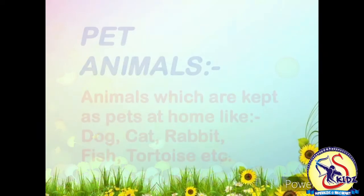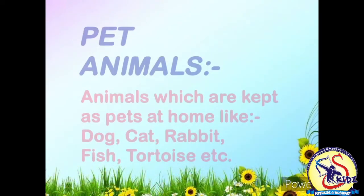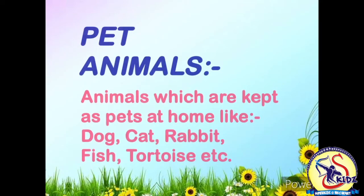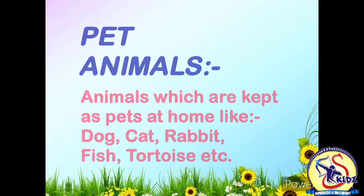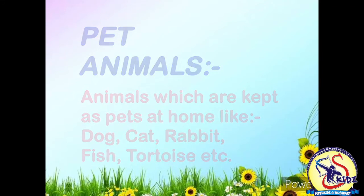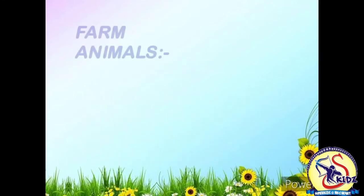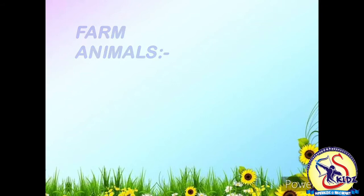Pet animals are those which are kept as pets at home, like dog, cat, rabbit, fish, and tortoise. Farm animals are those which give us something of use, like hen, sheep, goat, duck, donkey, and horse.